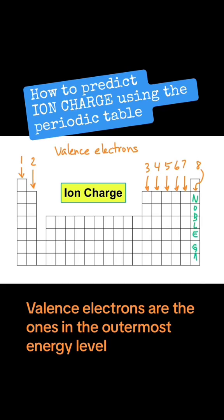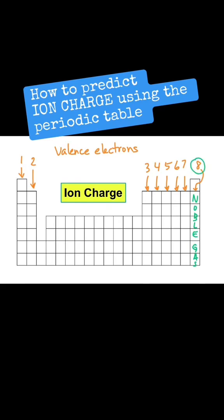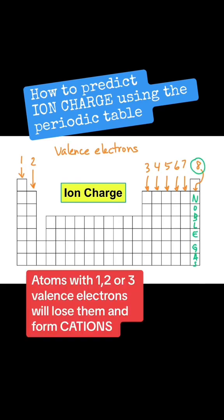The noble gases are already complete with eight. Now watch this: elements that have three, two, or one valence electrons are going to lose them and form cations, and their charges will be plus one, plus two, and plus three.